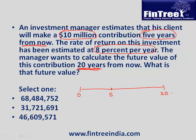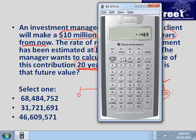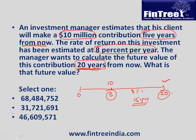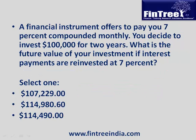The client will make a contribution of $10 million at year 5. The rate of return is 8%, and we want to know how much we will have in year 20. The distance between year 5 and year 20 is 15 years — those are the years for which money will compound. On the calculator: 10 is PV, 15 is N, 8 is IY, compute FV. The answer is 31.72 million, so the correct answer is 31,721,691.